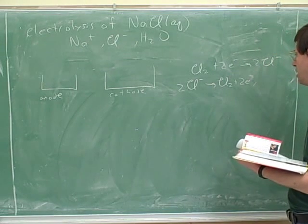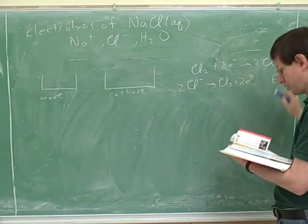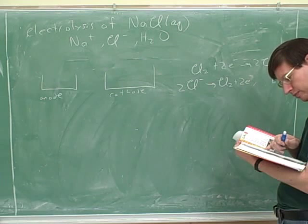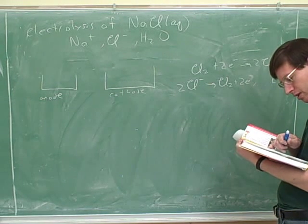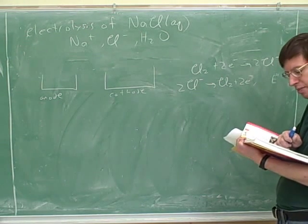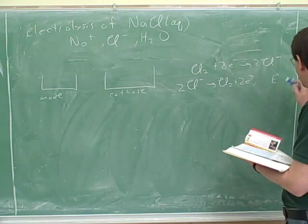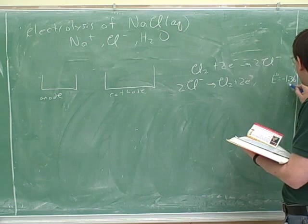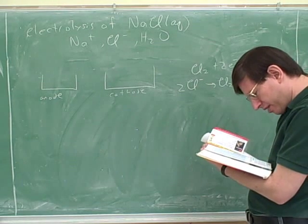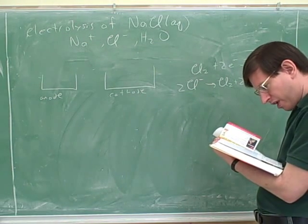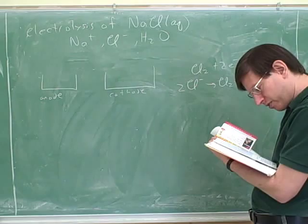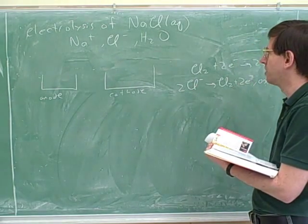So what should I write down as the potential for this reaction? Negative 1.36. Because we reversed it. In the table, it's positive 1.36, but we reversed the reaction. So this would be negative 1.36 volts. I'm going to make a note that that's the oxidation potential. Now you have to check, because sometimes there could be more than one reaction that something can go through, but I think this is the only reaction that makes sense here for chloride ions.